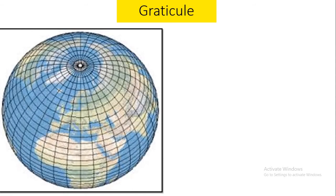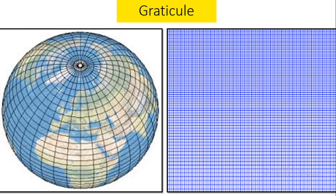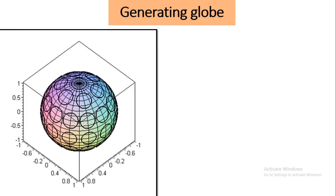What is a graticule? A graticule is nothing but the network of parallels and meridians. These are the different types of graticules — they are the network of parallels and meridians in different formations and forms.